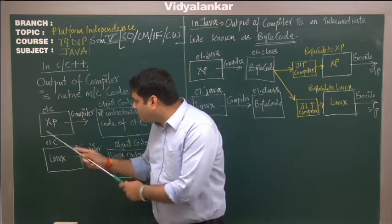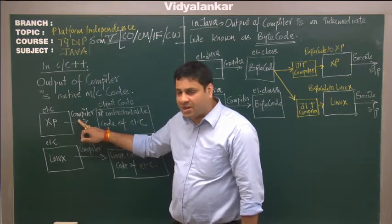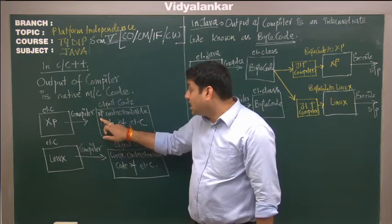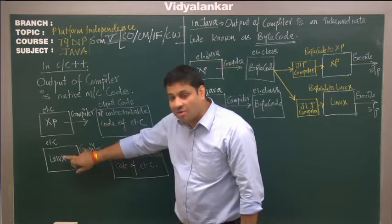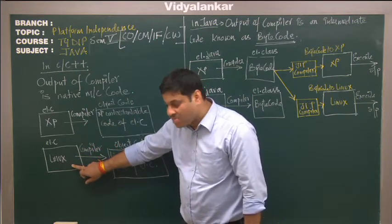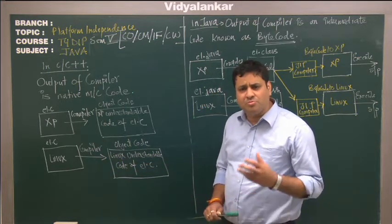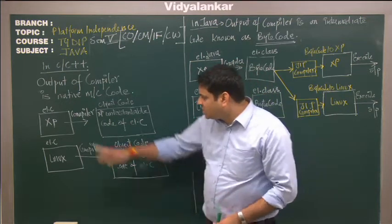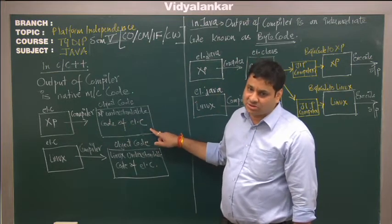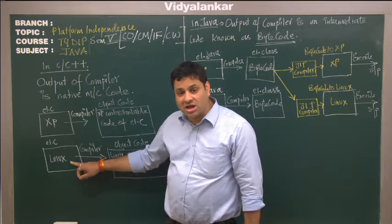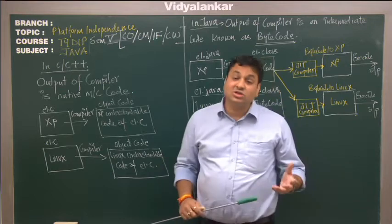So what happens is when we compile a C program on XP operating system, the output of compiler is object code, which is XP understandable code of the C program. Now if we compile the same C program on Linux operating system, the output of compiler is Linux understandable code. It means that when a C program compiled on XP, it can be executed on XP operating system only. When a C program compiled on Linux can be executed on Linux operating system only.